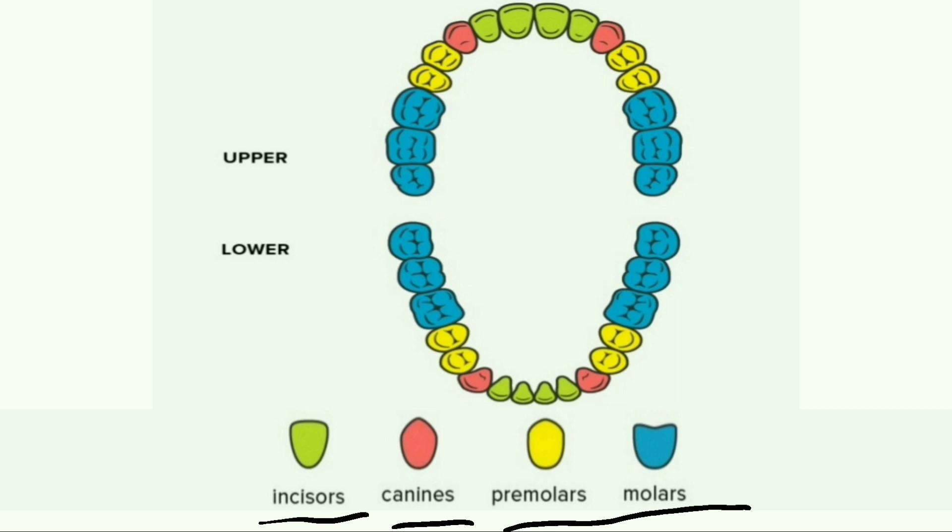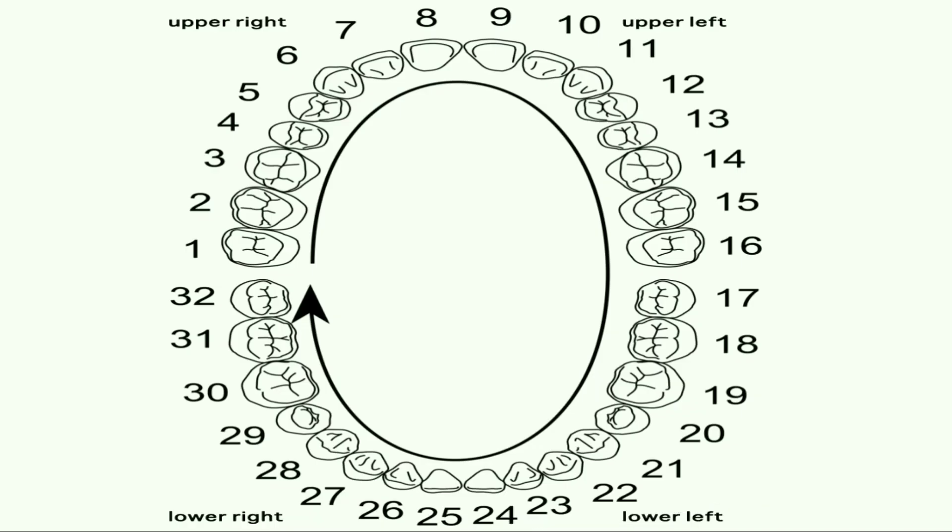So the total number of teeth in a grown-up adult may be 32.